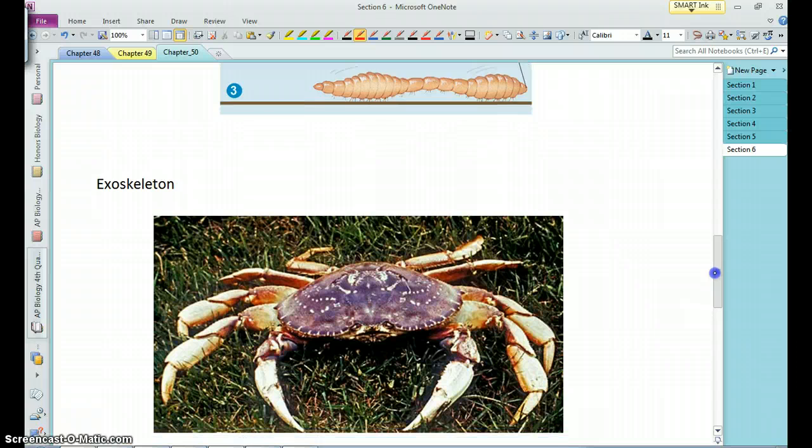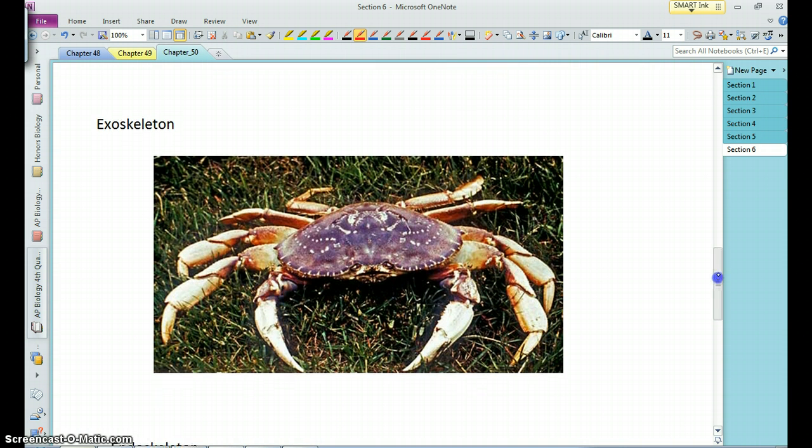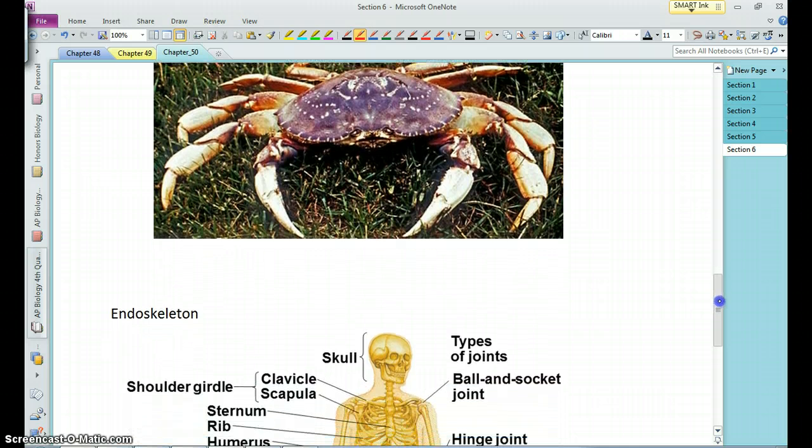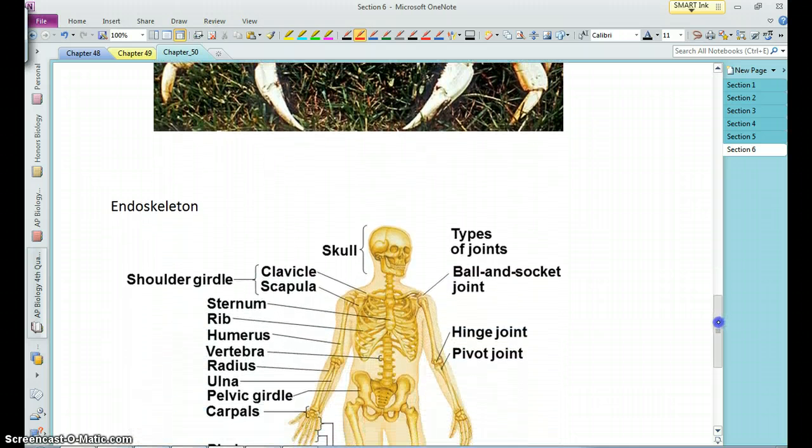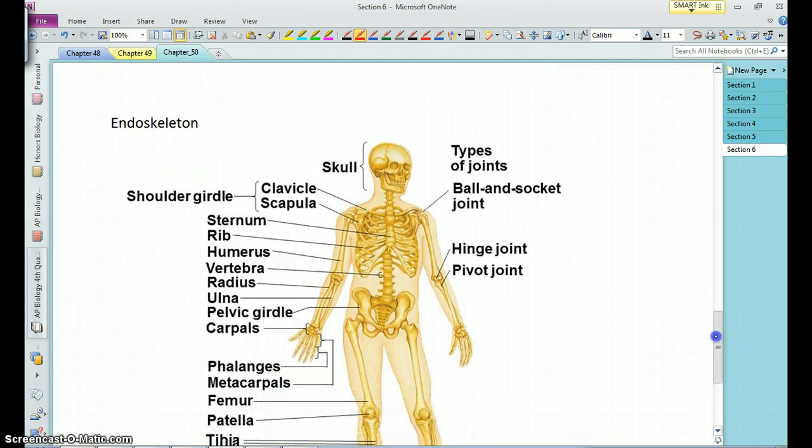Some organisms have an exoskeleton, like insects and other arthropods, this crab here. But we mammals and birds and reptiles, amphibians, all have an endoskeleton, an internal skeleton.